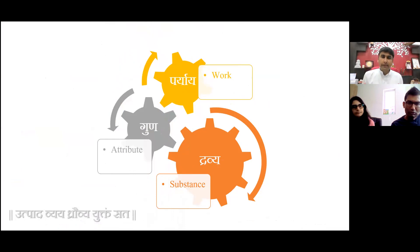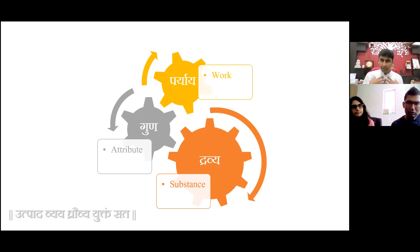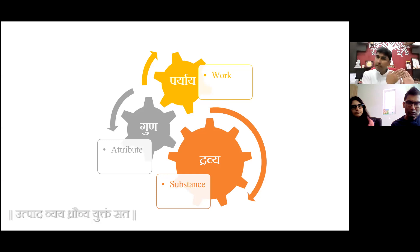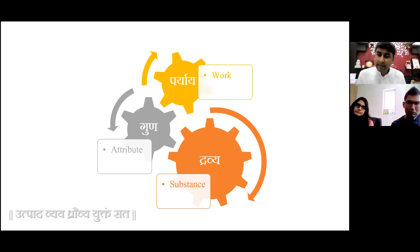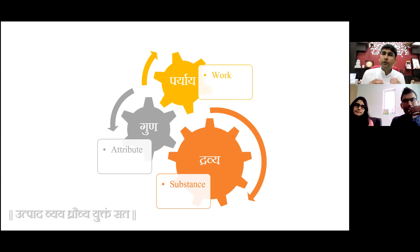Dravya has attributes. The attributes are the special qualities which are present in a Dravya in all its forms and at all times. So if I am Jiva and I have knowledge as my attribute, then I am conscious from each and every part of my soul. My soul knows from the toes, from the elbow, from each and every part. Wherever the soul is, the knowledge has to be there. Wherever sugar is, there has to be sweetness. The sugar is sweet from everywhere and at all times. The soul has knowledge everywhere in the soul and at all times.